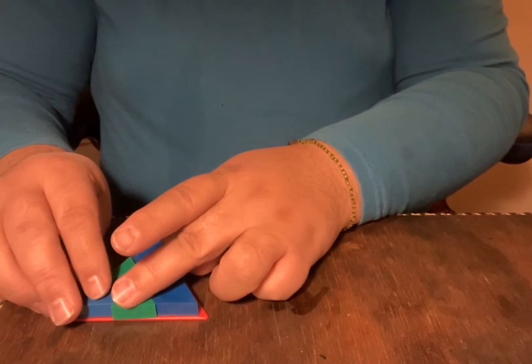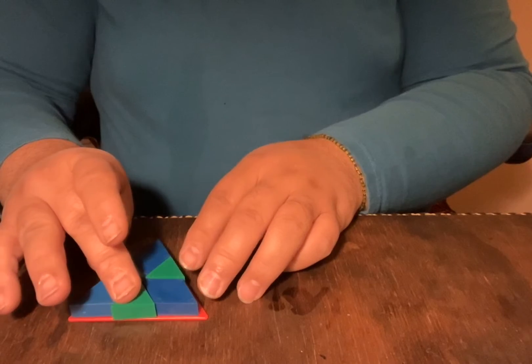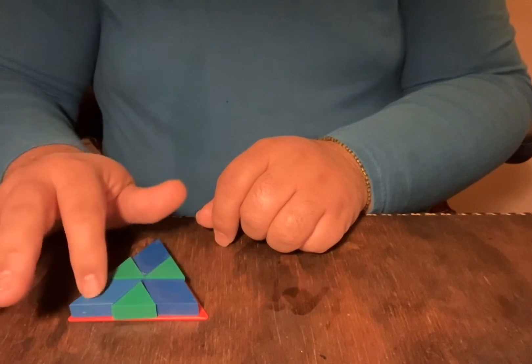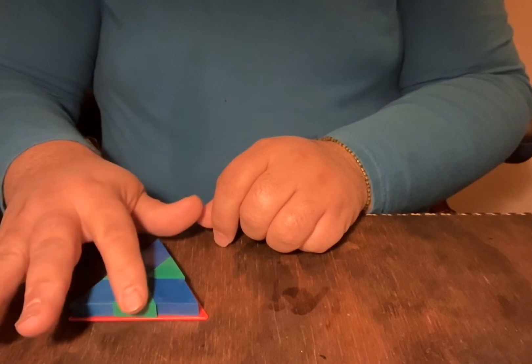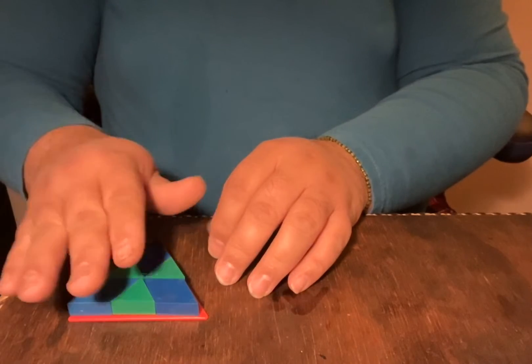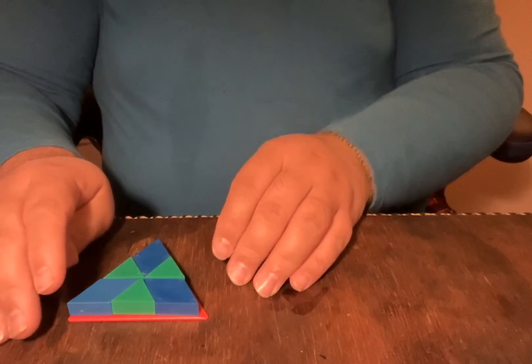So if we start counting, how many do we have as rhombus, which is the blue: one, two, three. How many do we have as a triangle: one, two, and three. So there's three of each. This is one way to make a triangle.